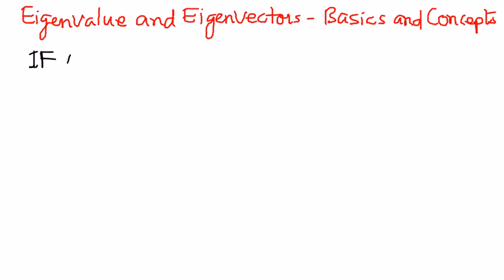If A is an n by n matrix, and if we have a term lambda, if lambda is a scalar quantity, if this is a scalar quantity, if lambda is a scalar quantity.